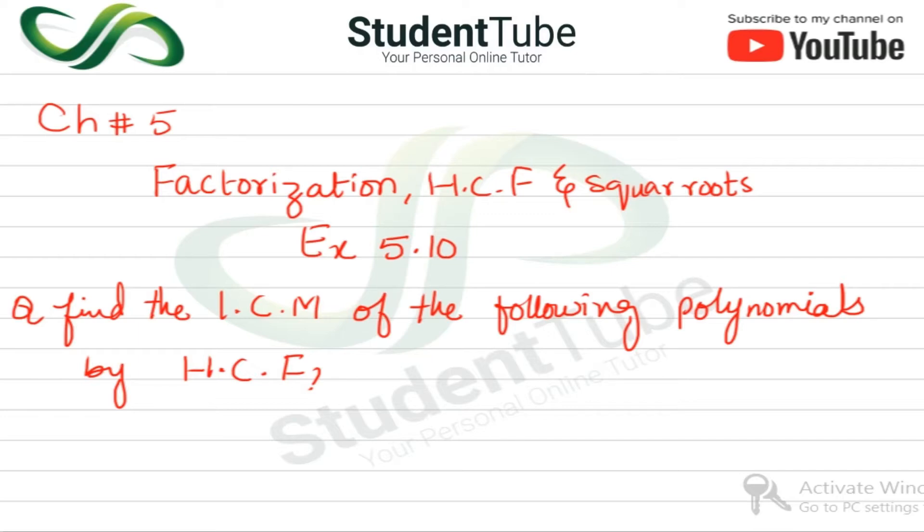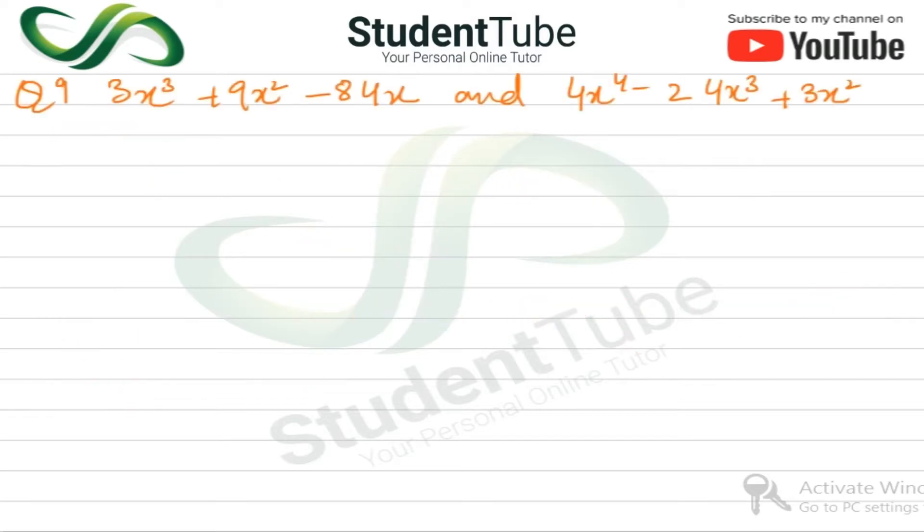So we have to find LCM here. Question number 9. For question number 9, we have two polynomials. First we have to take the first: 3x³ + 9x² - 84x.